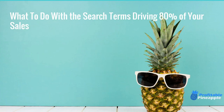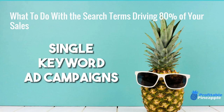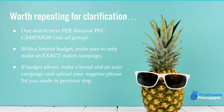20% of your workers produce 80% of your results. 20% of your customers create 80% of your revenue. 20% of the bugs cause 80% of the crashes. 20% of the features cause 80% of the usage. In Amazon world, 20% of your products are producing 80% of your revenue, and 20% of your customer search terms are driving 80% of your sales on Amazon PPC. All we're going to do is find, isolate, and scale those customer search terms.